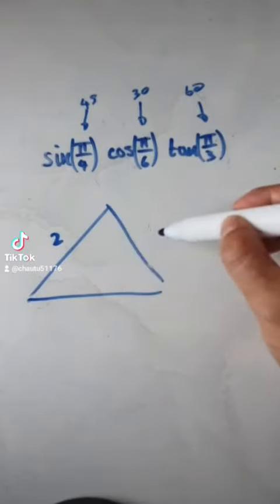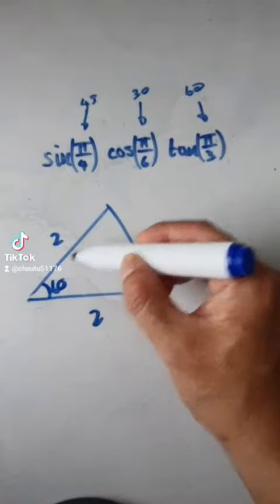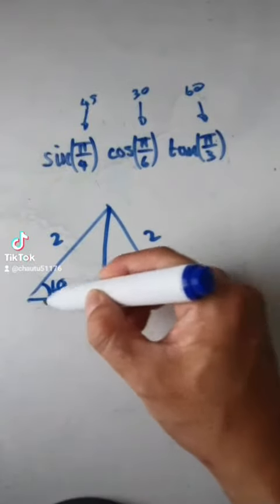The first being an equilateral triangle of length 2, 2, 2. So this is 60 degrees. If you cut it down the middle, the length here would be 1.